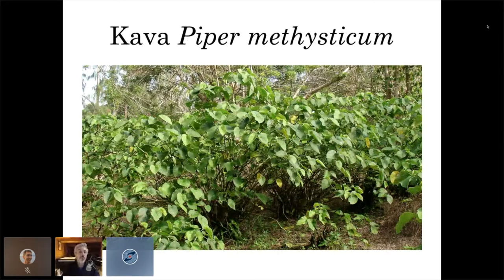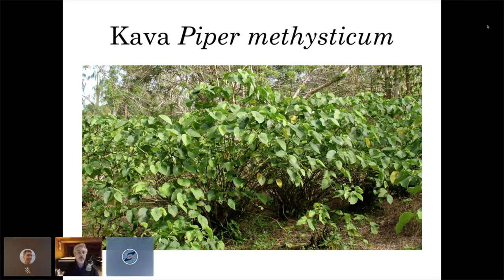Our botanical object of desire tonight is kava, Piper methysticum. Kava is a bushy green plant with classic heart-shaped piper leaves. It is the root of the plant — and the lateral roots that come off the main root stock — that are used as a beverage, typically drunk in the afternoons across all of Oceania. Kava drinking customs differ greatly, but kava is a central artifact of Pacific island cultures, highly revered. You go into any village in Vanuatu and you'll see tens, hundreds, or even thousands of kava bushes.